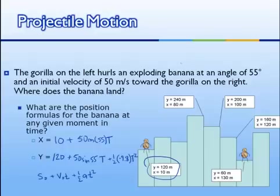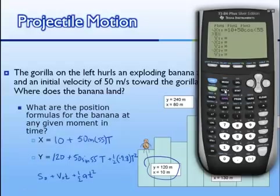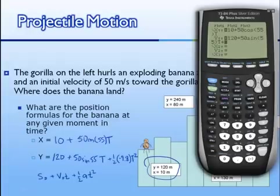I'd like to type that into my calculator and make a graph. We'll turn it on and go to Y equals — remember, I'm in parametric mode. The horizontal equation is: 10 plus 50 times cosine(55) times time. Vertically, we've got: 120 plus 50 times sine(55) times time, plus one-half of negative 9.8 times t squared.